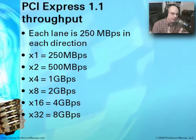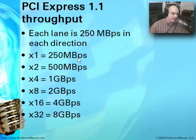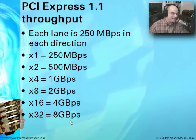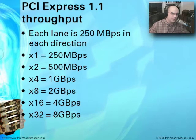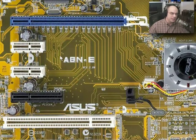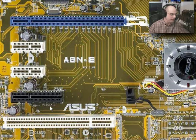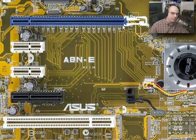The PCI Express throughput numbers are impressive. A single lane runs at 250 megabytes per second. A system supporting 32 lanes gets 8 gigabytes per second. Most video today uses x16, which runs at 4 gigabytes per second. On the motherboard, here's a 1x slot — very small and short. Here's a 4x labeled 'PCI EX4,' and here's the larger x16 slot up top. That's exactly where we'd plug in a video card to run as fast as possible going into the North Bridge.